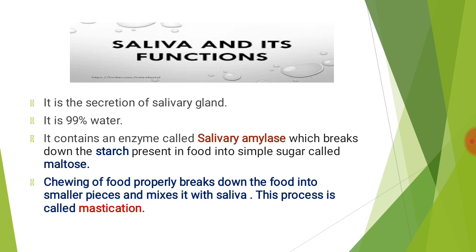The starch present in food breaks down into the simple sugar called maltose. Chewing our food properly breaks it down into smaller pieces and mixes it with saliva. This process is called mastication.